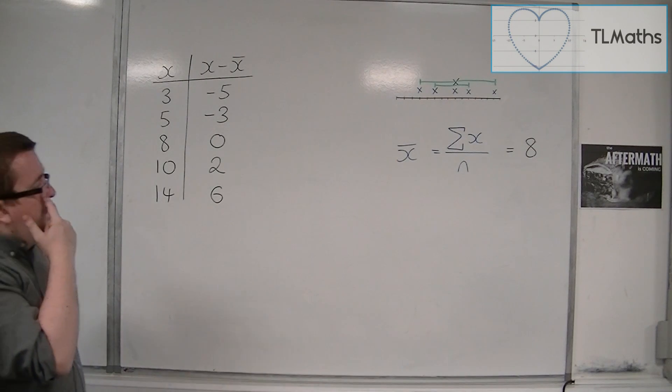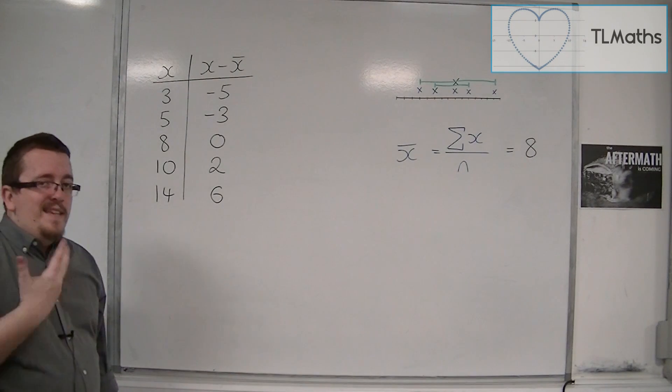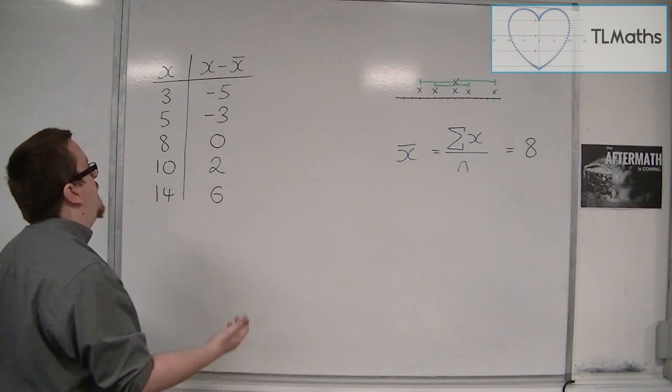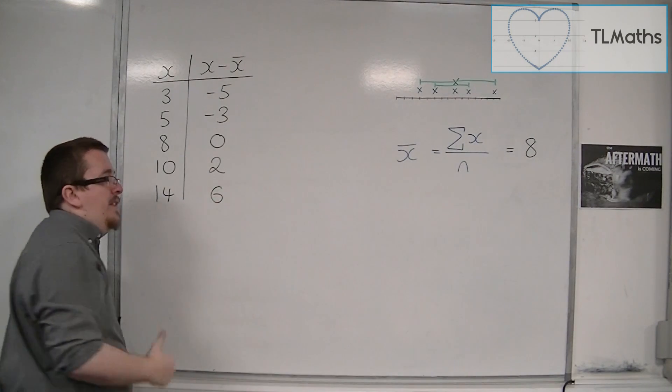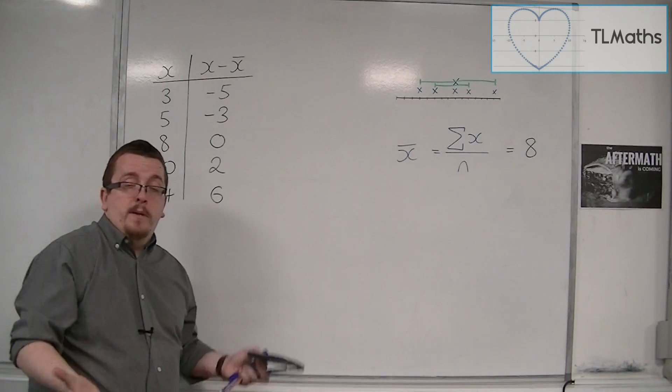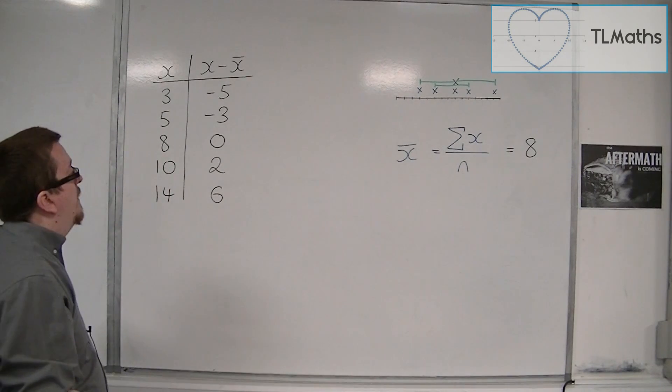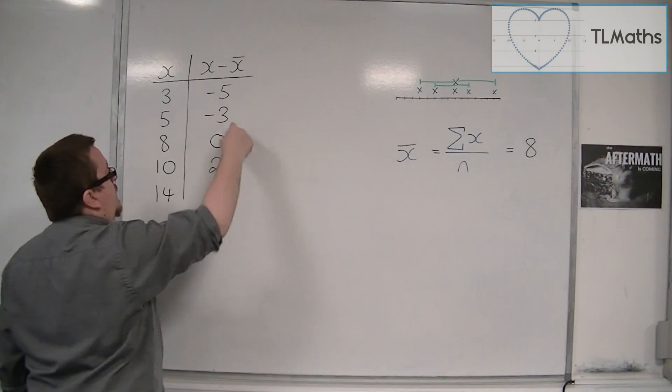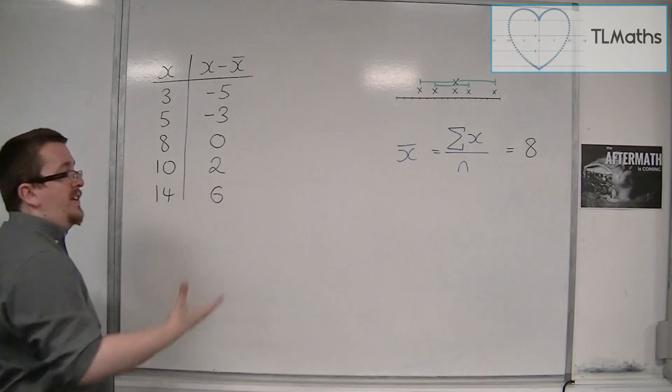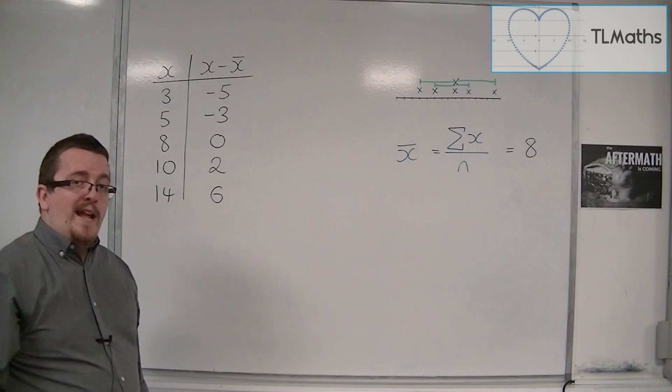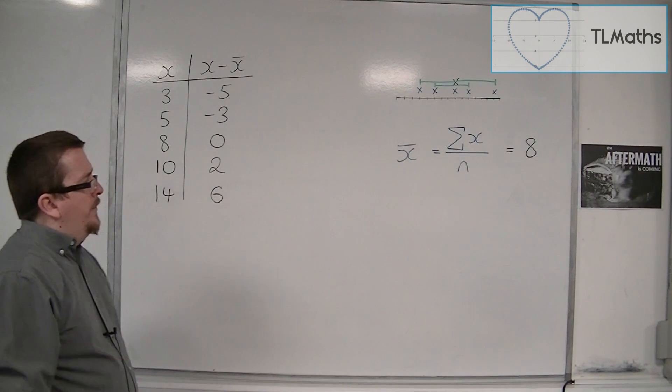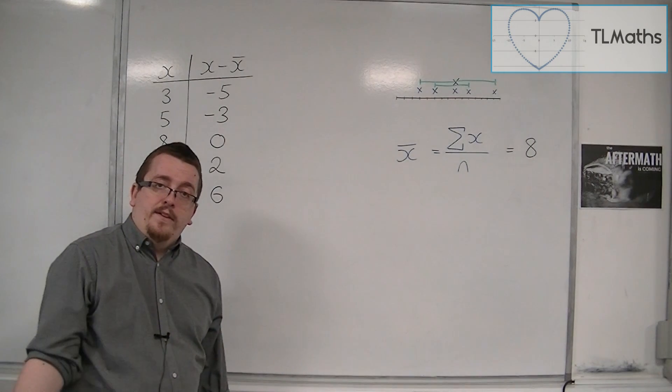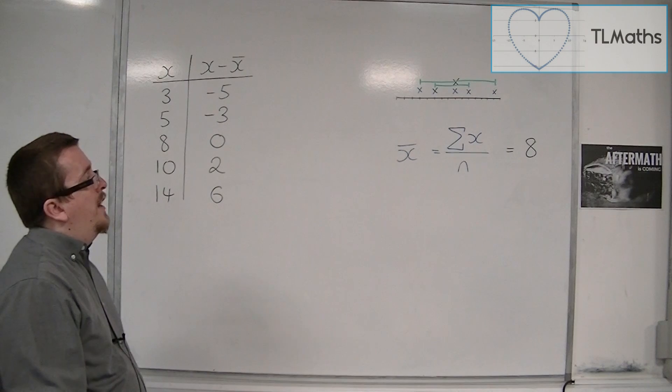Now, if I wanted to find the average of these distances, then I would add these up and divide by how many there are. It would be like finding the mean of these numbers. The only problem is that minus 5, minus 3, 2, and 6 add up to 0. They all cancel each other out. So just adding them up and dividing by how many there are isn't going to tell me anything. 0 is really not going to help.